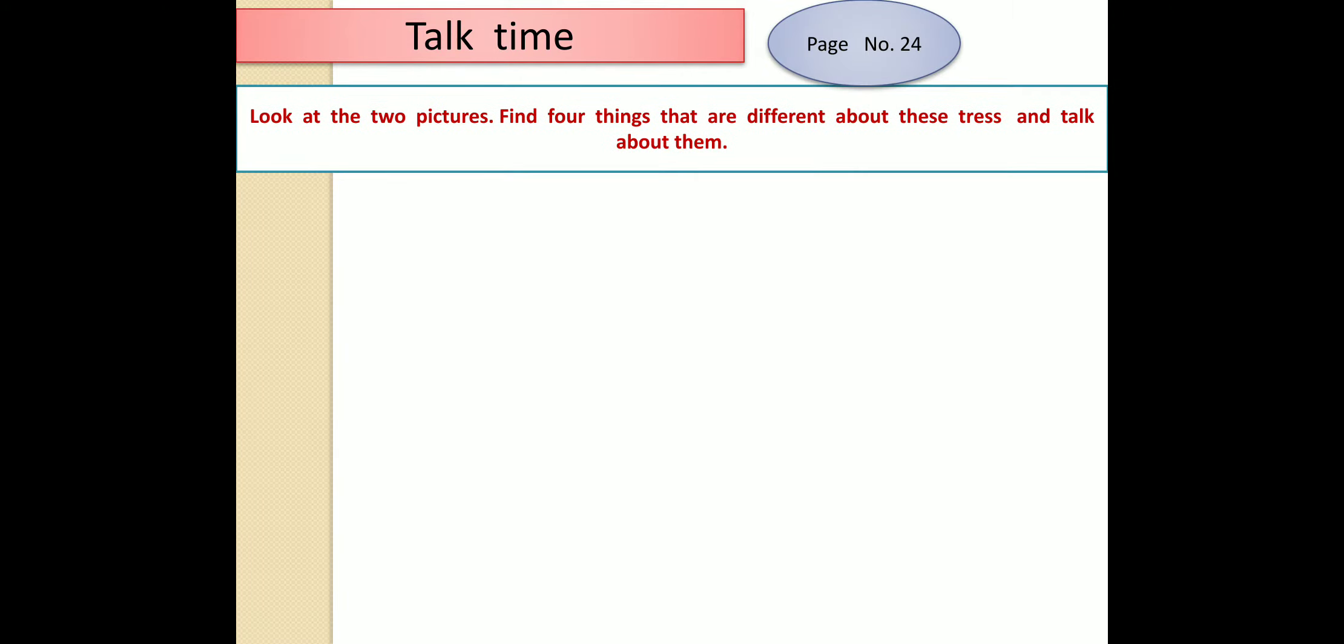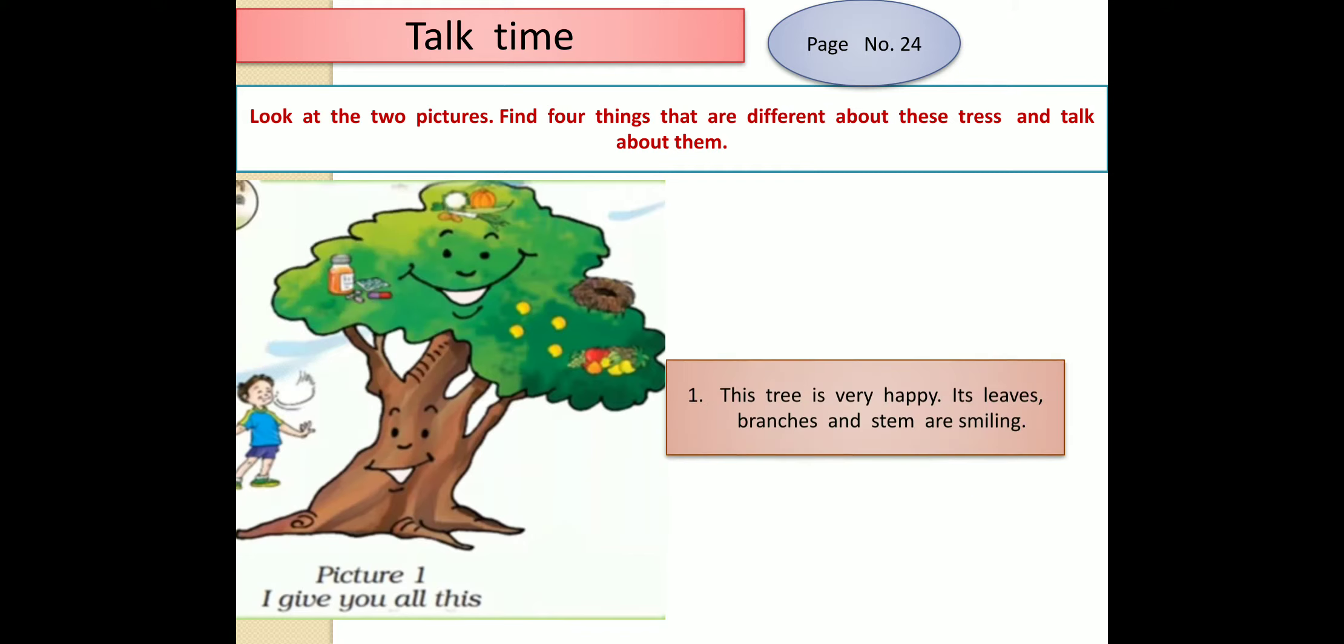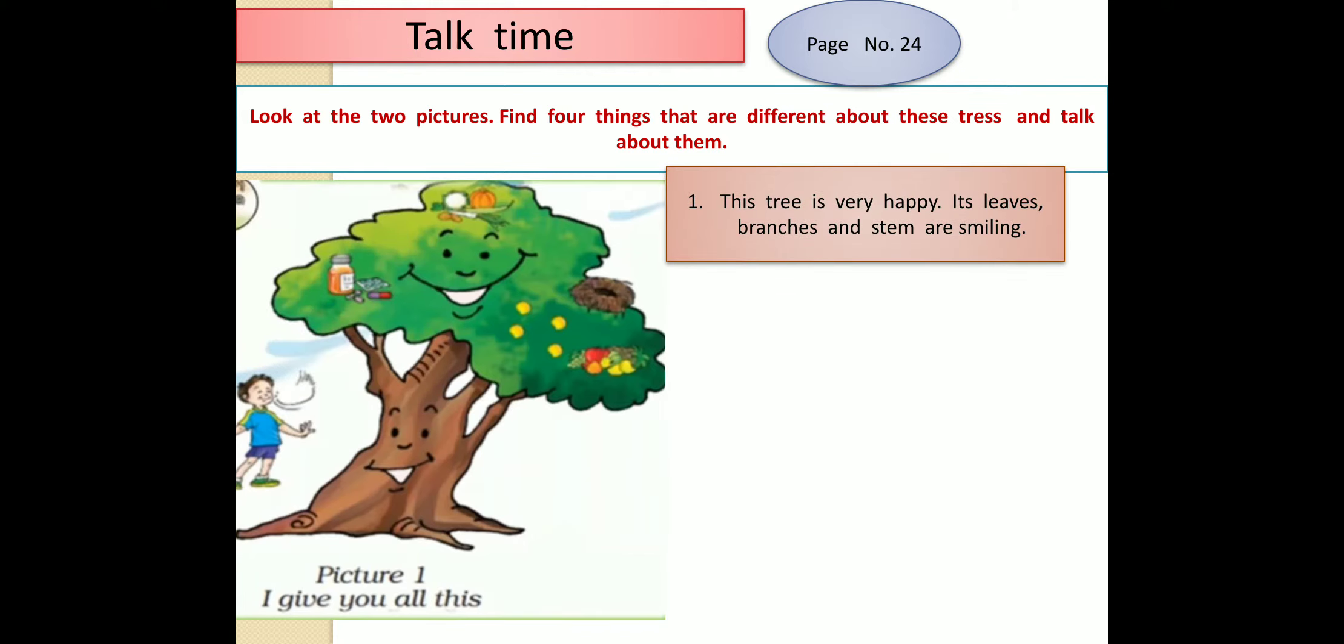Now look at two pictures. Find four things that are different about these trees and talk about them. So here in picture one You observe carefully What is this picture one That is this tree is talking about. This tree is very happy. Its leaves, branches and stem are smiling.